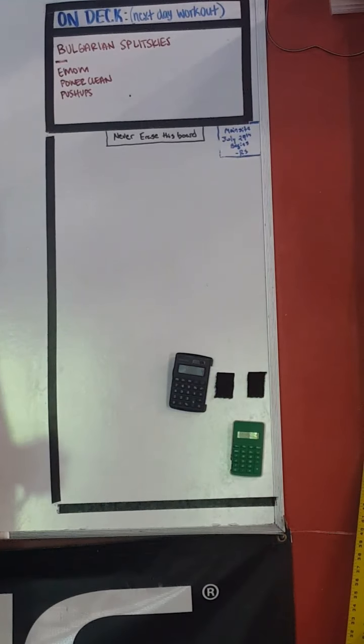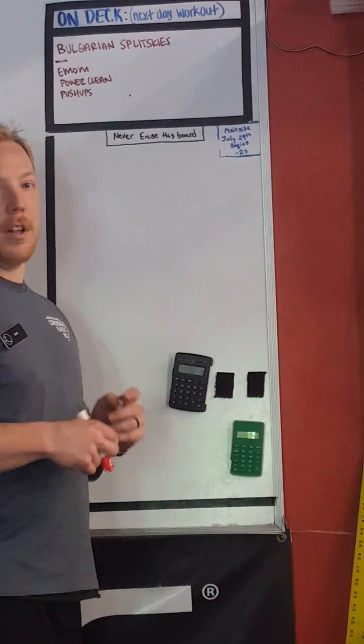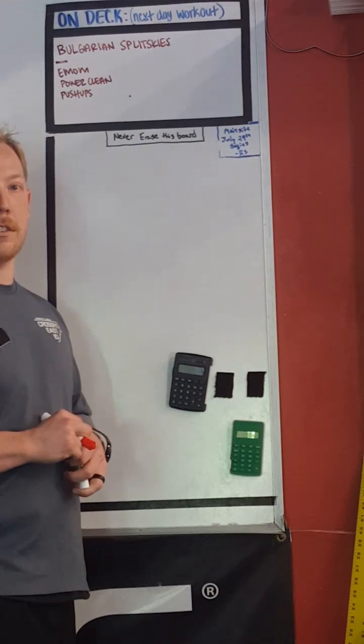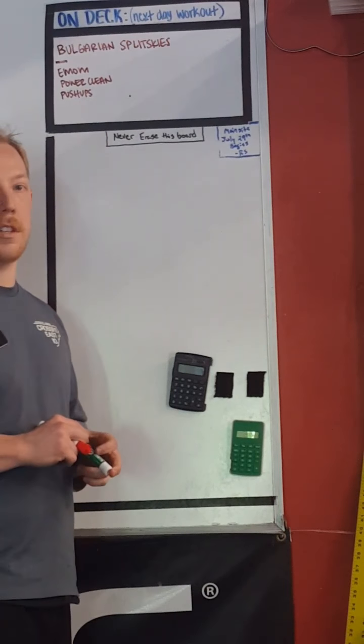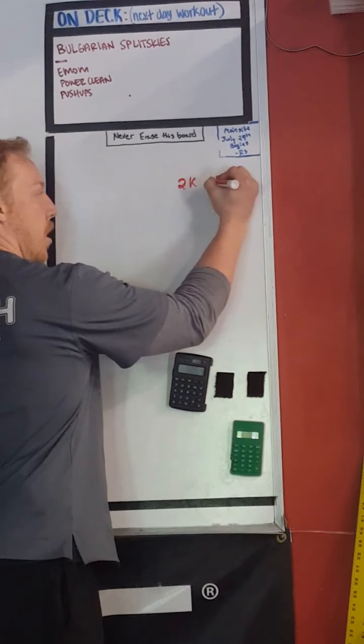We're going to talk about how to get your 90% for rowing. What that means is you need to know your 2K row. We've told you this probably once or twice over the past three years, but you're going to need to have a 2K row.